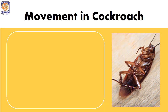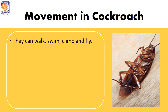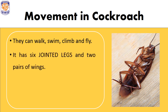Movement in cockroach: Cockroaches are versatile creatures which can show a variety of movement — they can walk, swim, climb, and sometimes fly short distances. A cockroach has six jointed legs and two pairs of wings.